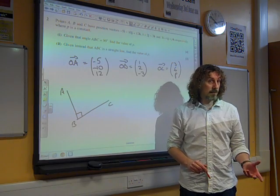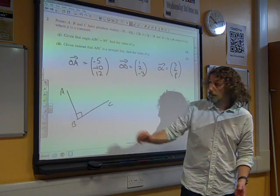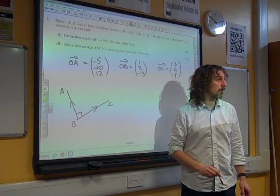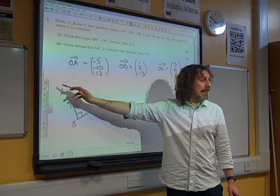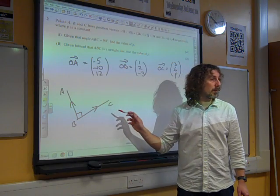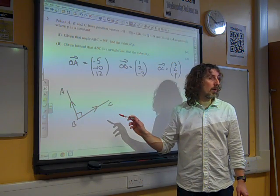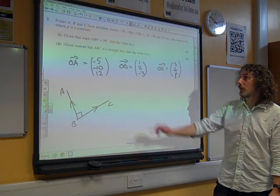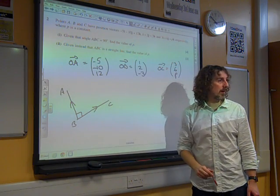So when we're considering this, the vectors that we're interested in are the vectors that are departing that angle. So it's the vector BA, and the vector BC that we want. So we need to work out what those vectors are so that we can use the fact that they are at right angles.